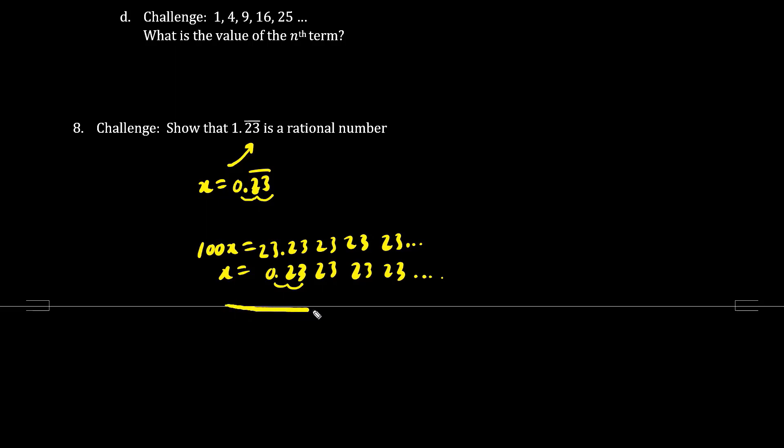Now let's subtract. 100x minus x is 99x. 23 minus 0 is just 23. And everything here after the decimal cancels out. So we have a bunch of infinite zeros. Dividing both sides by 99, we have x equals 23 over 99.